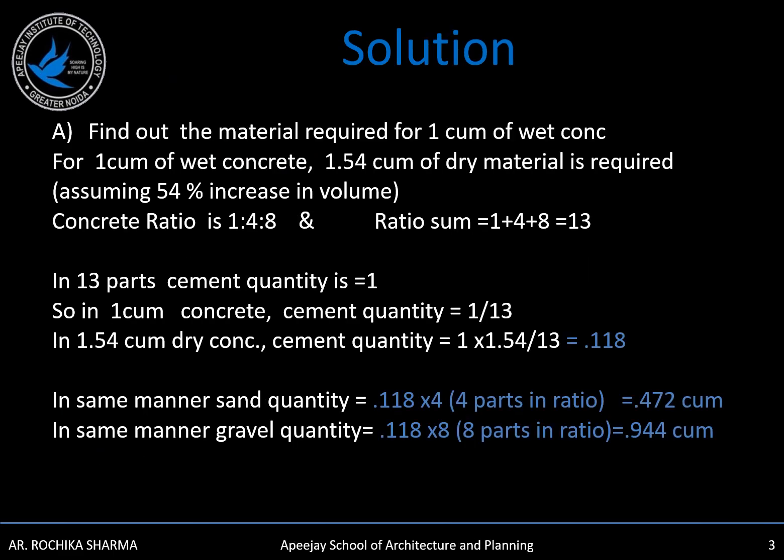We will start with material for 1 cubic meter of wet concrete. 1.54 cubic meters of dry material is required. We will assume that 54% increase in volume will be there, so for dry concrete we will need 1.54 cubic meters of material. The concrete ratio is 1:4:8 and the ratio sum will be 13.